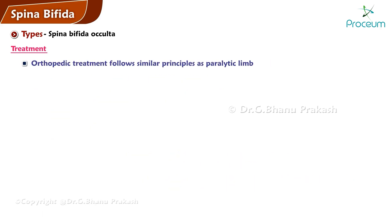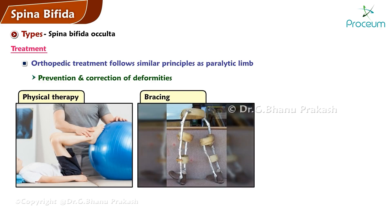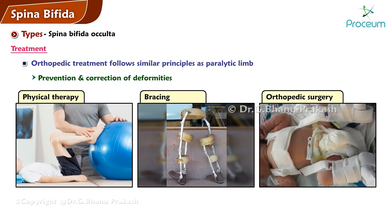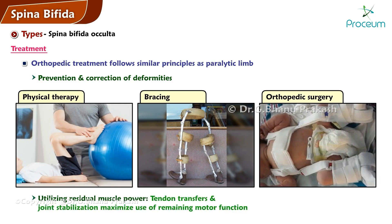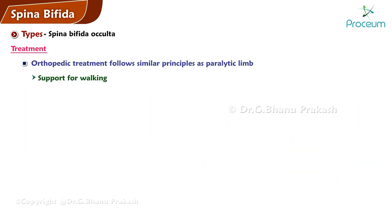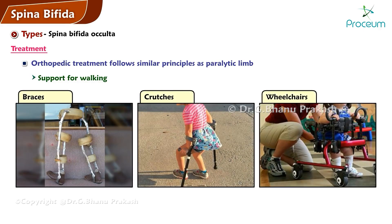Orthopedic treatment for spina bifida occulta often follows similar principles as for a paralytic limb: prevention and correction of deformities. This might involve physical therapy, bracing, or in more severe cases orthopedic surgery, utilizing residual muscle power for more useful functions. Techniques such as tendon transfers and joint stabilization can help maximize the use of any remaining motor function. Providing support for walking can involve the use of aids such as braces, crutches, or wheelchairs, depending on the individual's needs, with the main goal being to optimize the patient's mobility and independence.